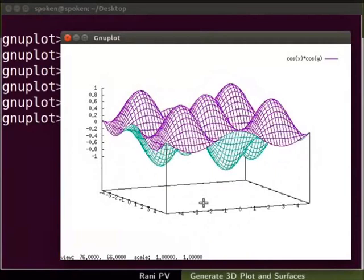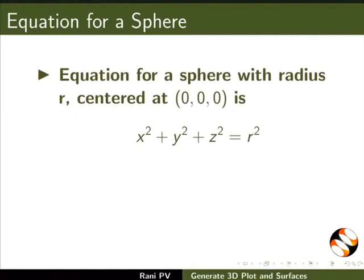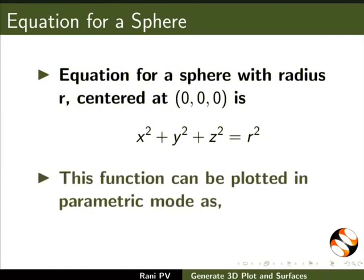Next, we will plot a sphere in GNUplot. Close the graphics window. Equation for a sphere with radius r, centered at (x0, y0, z0) is shown here. It is x² + y² + z² = r². This function can be plotted in parametric mode as seen here.